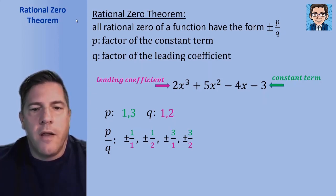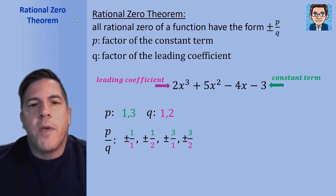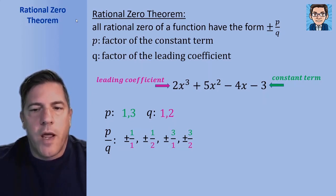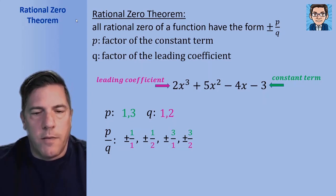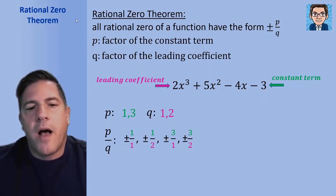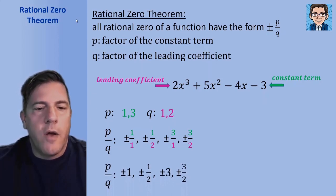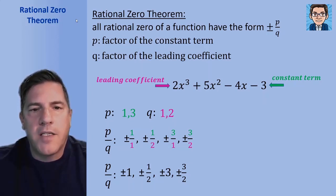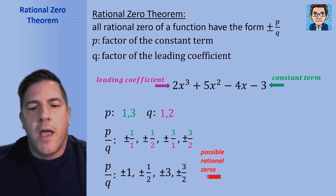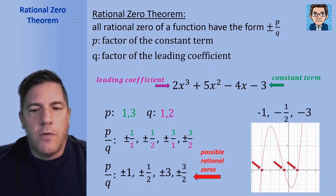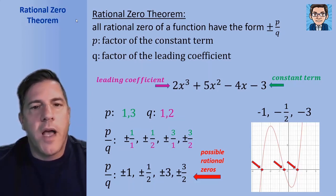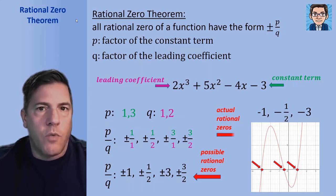Sometimes when you see this explained, you'll see the factors listed as plus or minus 1 and plus or minus 3. I just add the plus or minus at the end. Everything we get for p over q is going to work plus or minus. So we've got 8 different possible values. Simplifying, we get plus or minus 1, plus or minus one half, plus or minus 3, and plus or minus 3 halves. The actual zeros of this equation are negative 1, negative one half, and negative 3 — those are 3 out of the 8 that are the actual rational zeros.